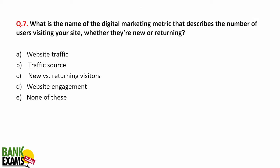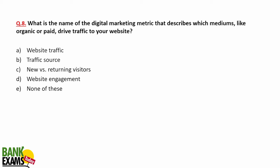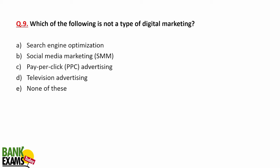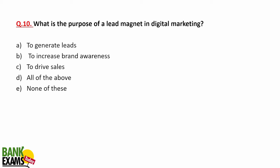MCQ: The digital marketing metric that describes the number of users visiting your website is website traffic. The metric that describes which mediums — like organic or paid — drive your traffic is traffic source. Organic means traffic coming from a search engine for free, without paying. Television advertising is not a digital marketing strategy — PPC, SMM, and SEO all are.